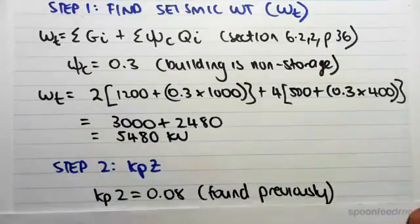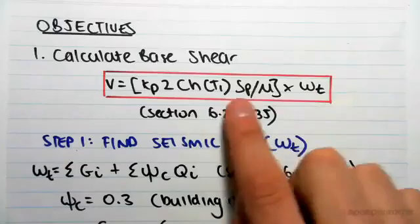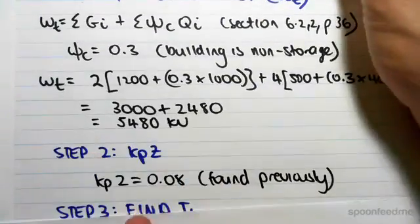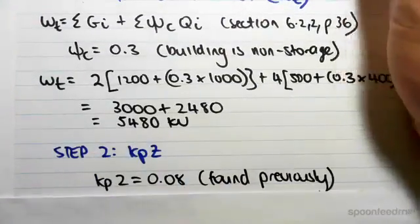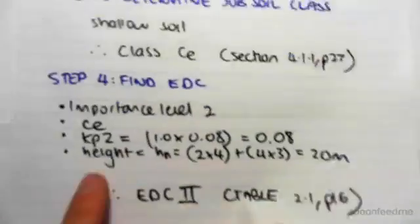Step two is finding kpz. We know so far Wt equals 5480 kilonewtons. Kpz we're finding now. Ch equals 0.08, which we found in the previous video. Let me show you where kpz is.